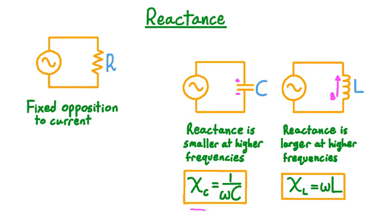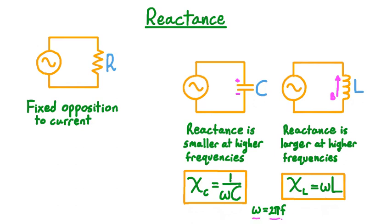As formulas, the capacitive reactance is 1 divided by the angular frequency of the voltage and current times the capacitance. The inductive reactance is the angular frequency of the voltage and current times the inductance. Note that both formulas give the correct qualitative relationship: capacitive reactance is inversely proportional to frequency, while inductive reactance is directly proportional to frequency. Omega, the angular frequency, is defined as 2π radians times the regular frequency or cycles per second. We use omega because it helps us write these formulas simply without carrying around factors of 2π.